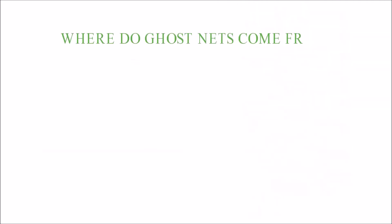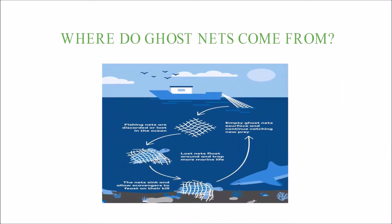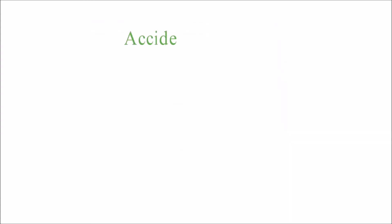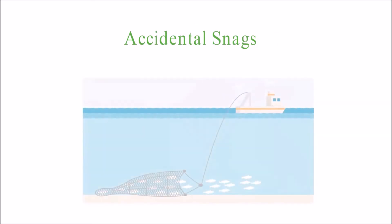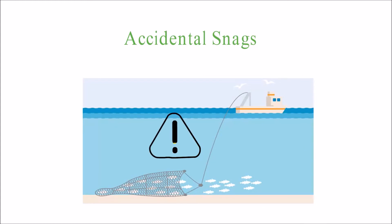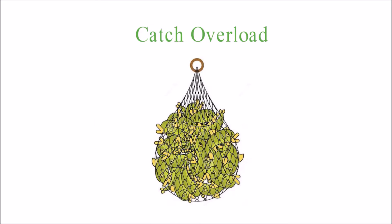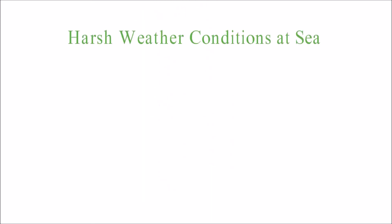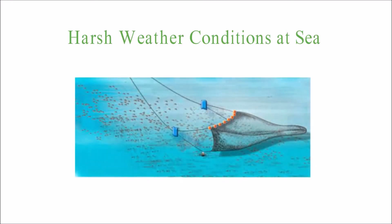Where do ghost nets come from? Ghost nets reach the ocean in different ways. Most of the time, fishing nets are intentionally thrown into the ocean. Accidental snagging: some fishing practices, like trawling, can cause nets to get caught on the ocean floor — they can tear and drift away with the currents. Catch overload: when too many fish are caught, fishing nets get overfilled, which can cause them to tear. Fishermen also often throw fishing nets overboard to make room for more fish on the boat. Harsh weather conditions: during storms, nets can fall off trawl boats and drift away before they can be retrieved.